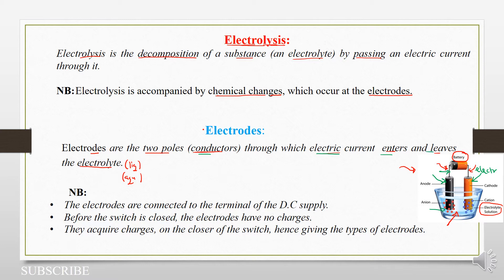Electrodes are the conductors through which electric current enters and leaves. If our current is entering one electrode in one direction, it enters the electrolyte, and then at the second electrode it will be leaving the electrolyte to the wire. Take note: the electrodes are connected to the terminals of the DC supply through the wire. Before the switch is closed, the electrodes have no charges, because the circuit isn't yet complete. They will always acquire charges on closure of the switch, hence giving us the types of electrodes.